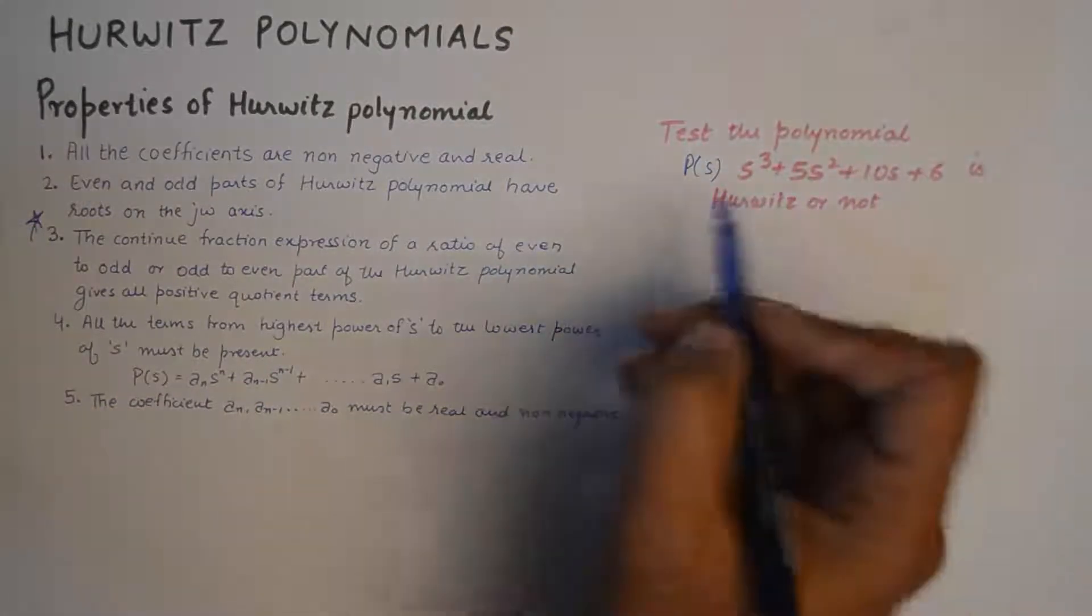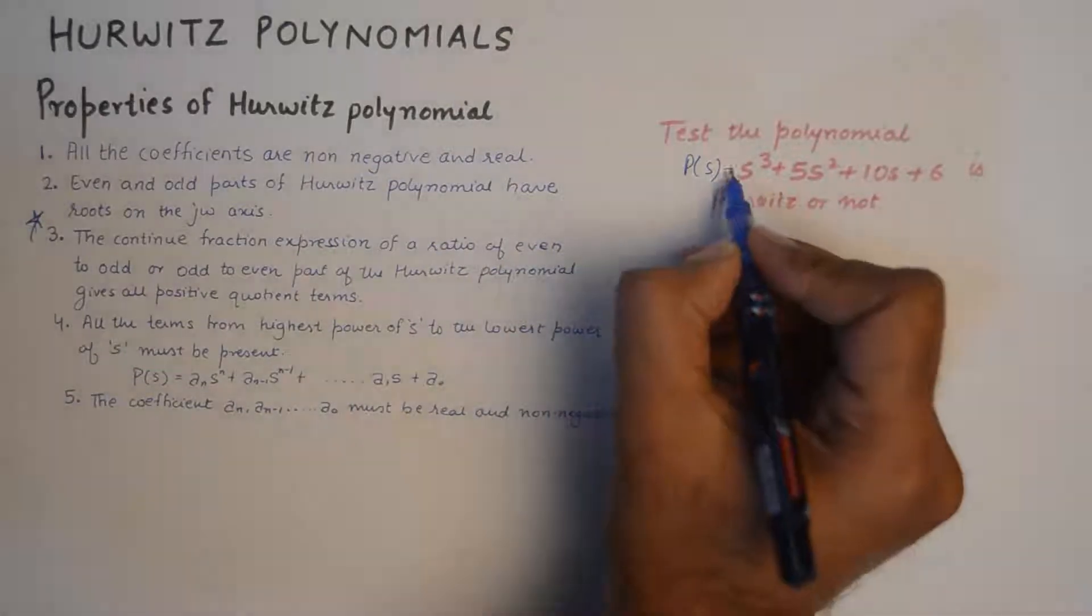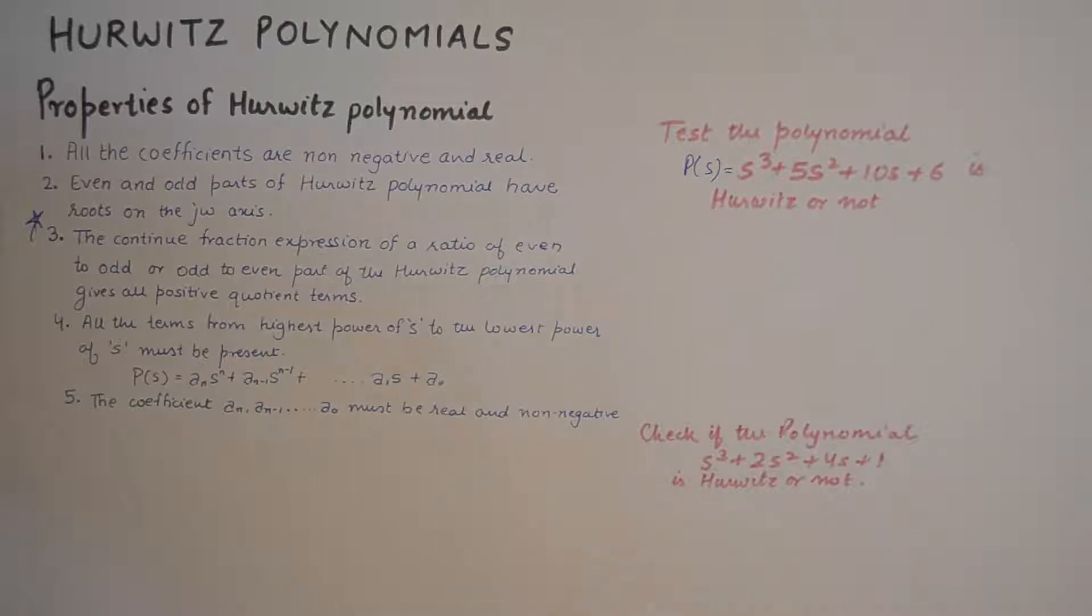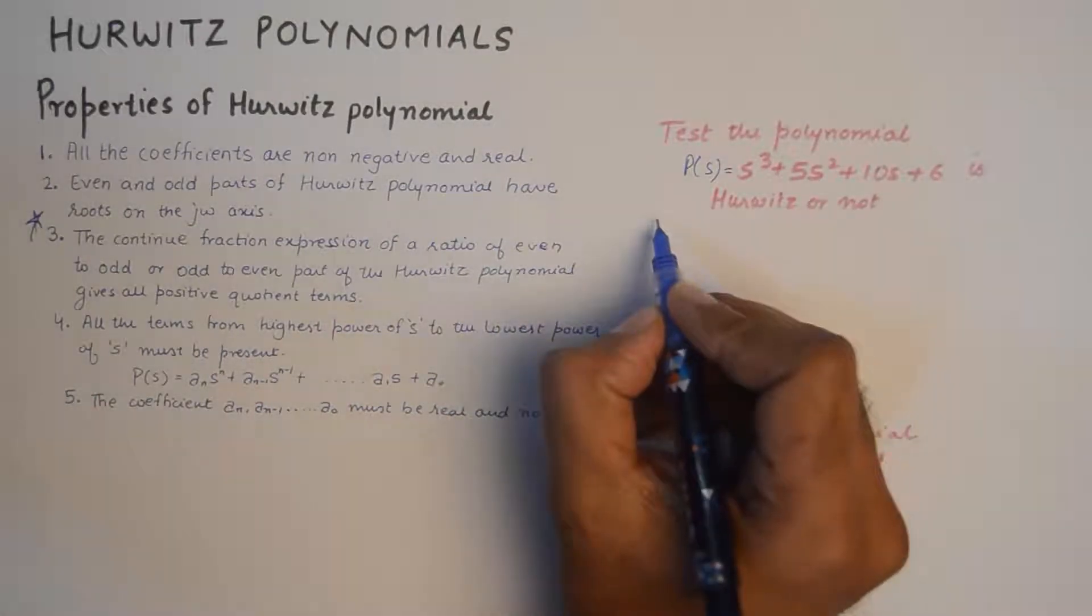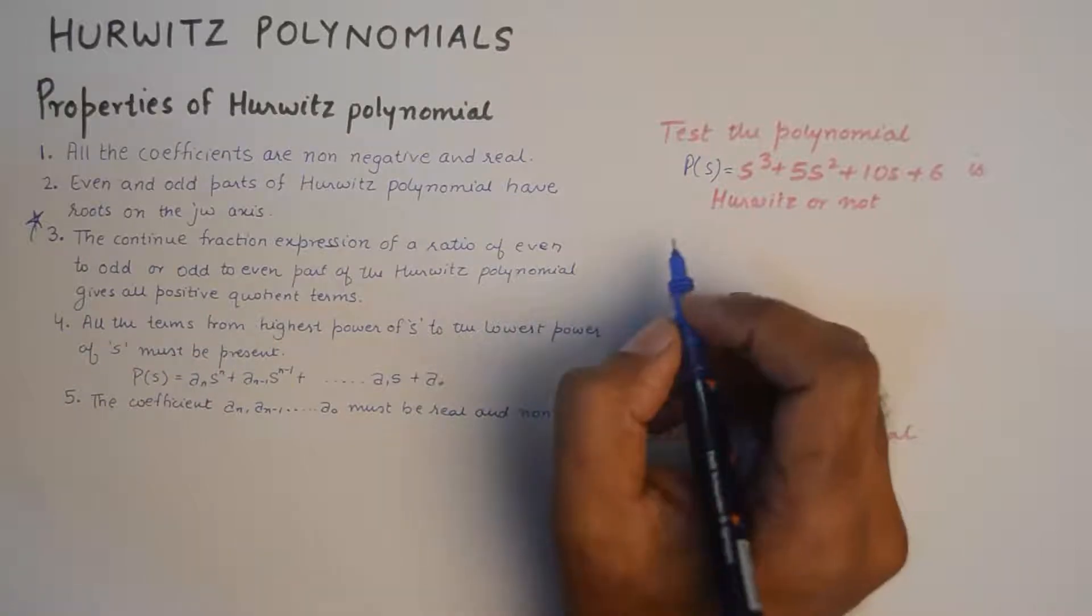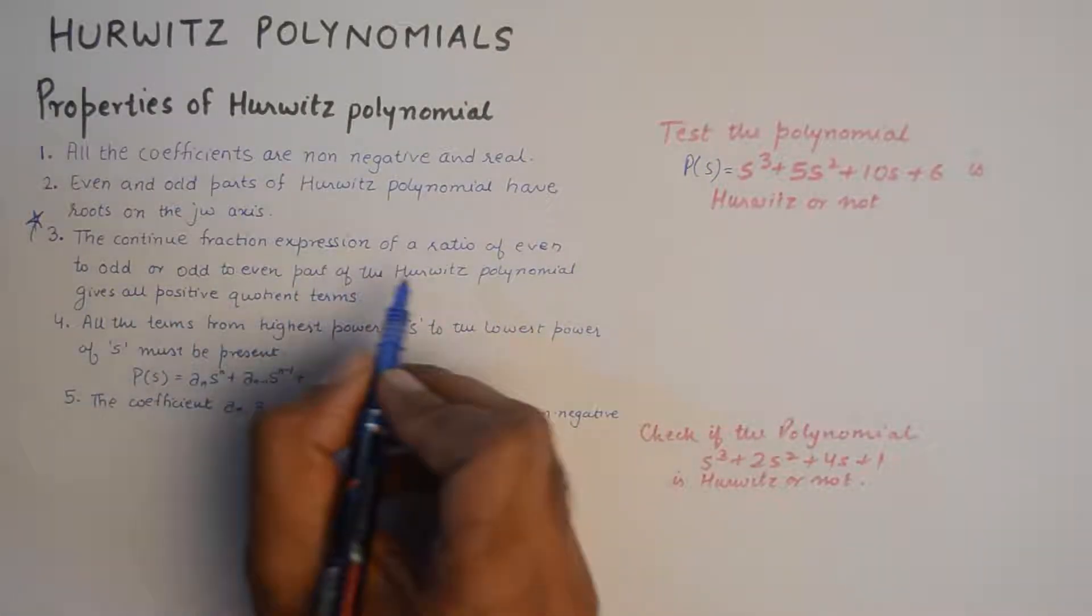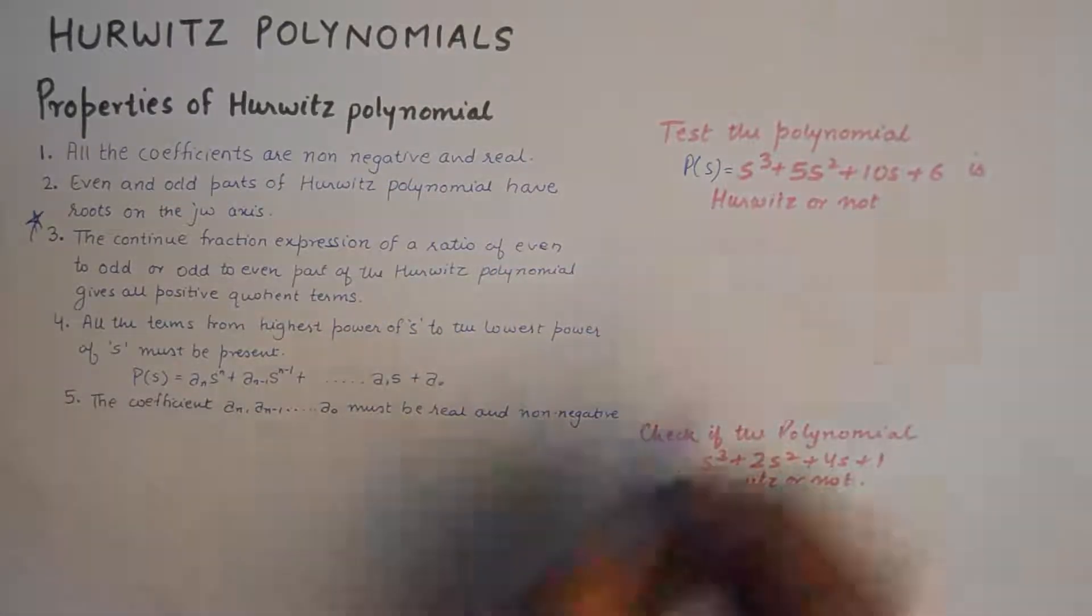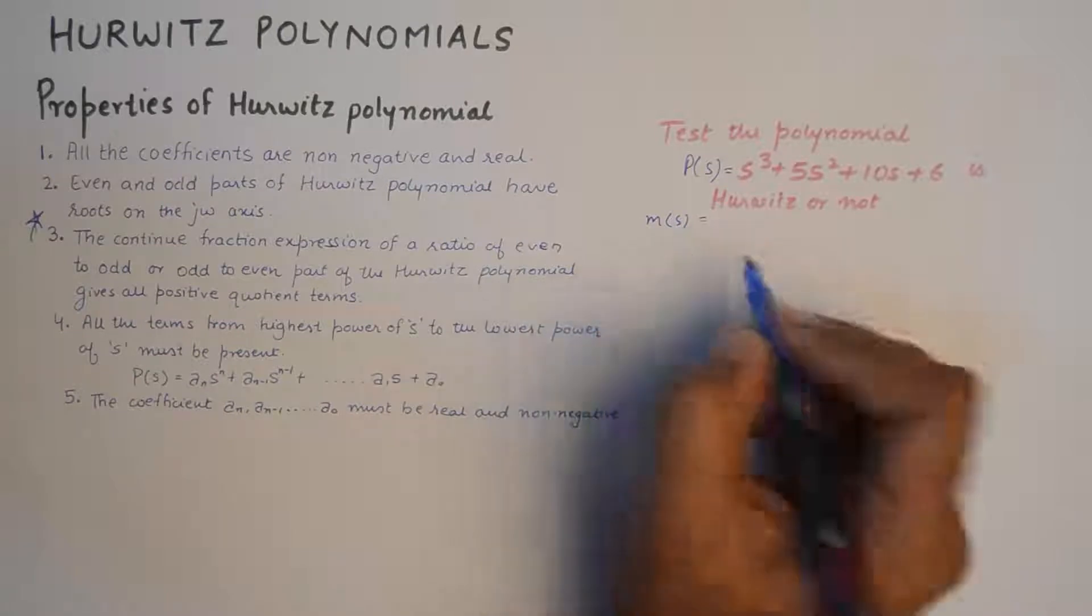For example, we have a polynomial P(s). Now instead of checking everything in this polynomial, I'm going to show you property number three as to how you can implement it. Now from this polynomial you'll need to separate out the even part and the odd part, and then we'll find the continued fraction expression of the ratio of even to the odd part.